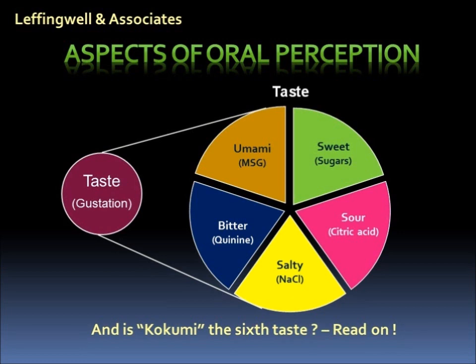It was first discovered in Japan by Kikunae Ikeda in the early 1900s. He found that glutamate was responsible for the palatability of the broth of kombu seaweed. It's described as a delicious, brothy, or meaty taste. Umami compounds have a long history of use in the food industry for their flavor enhancing properties.